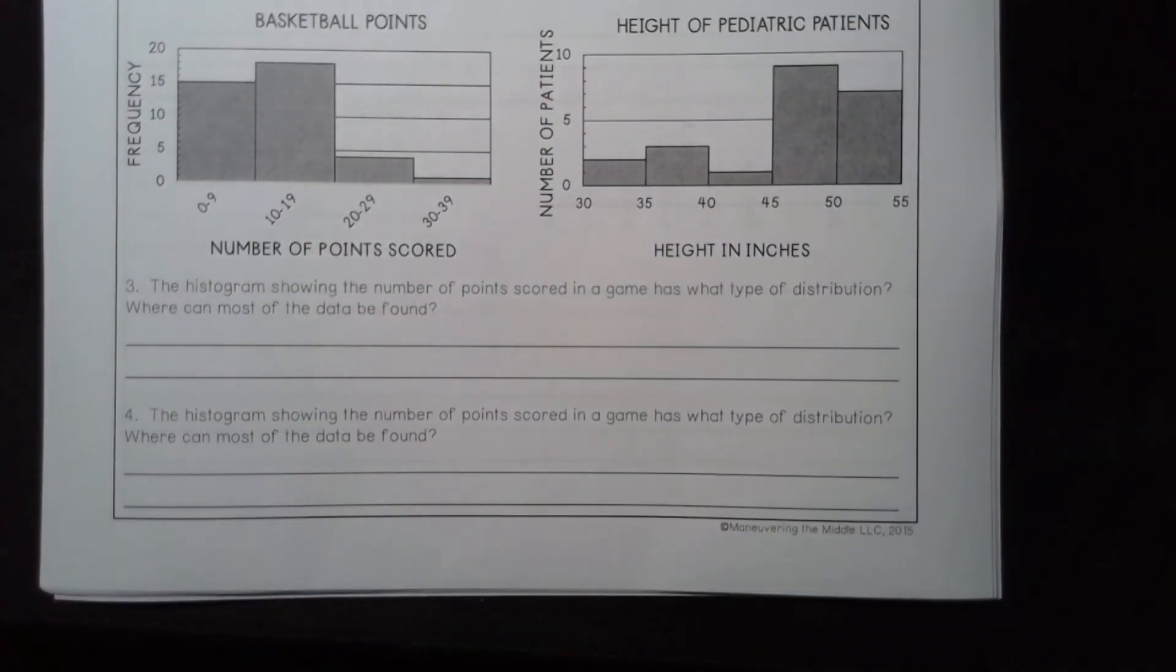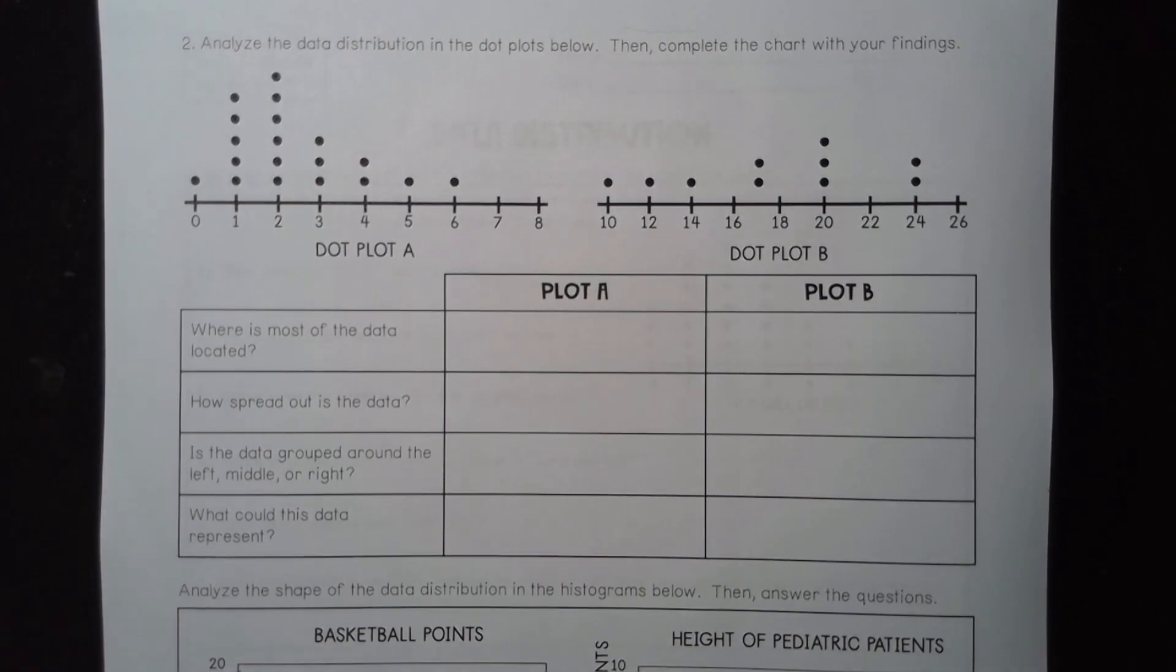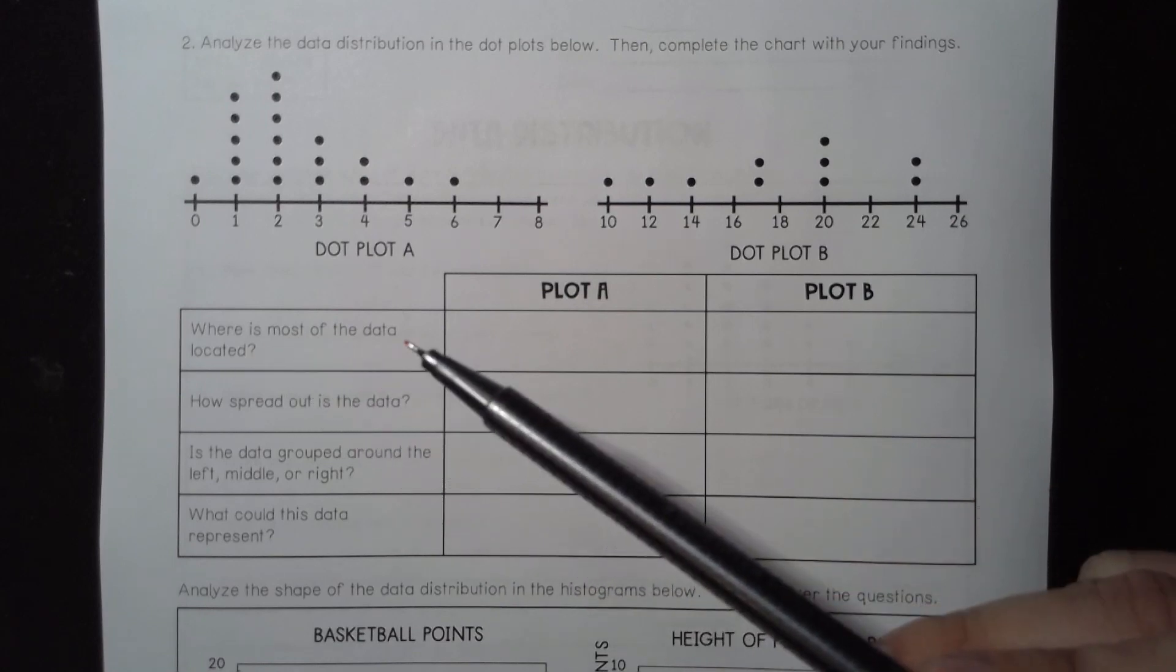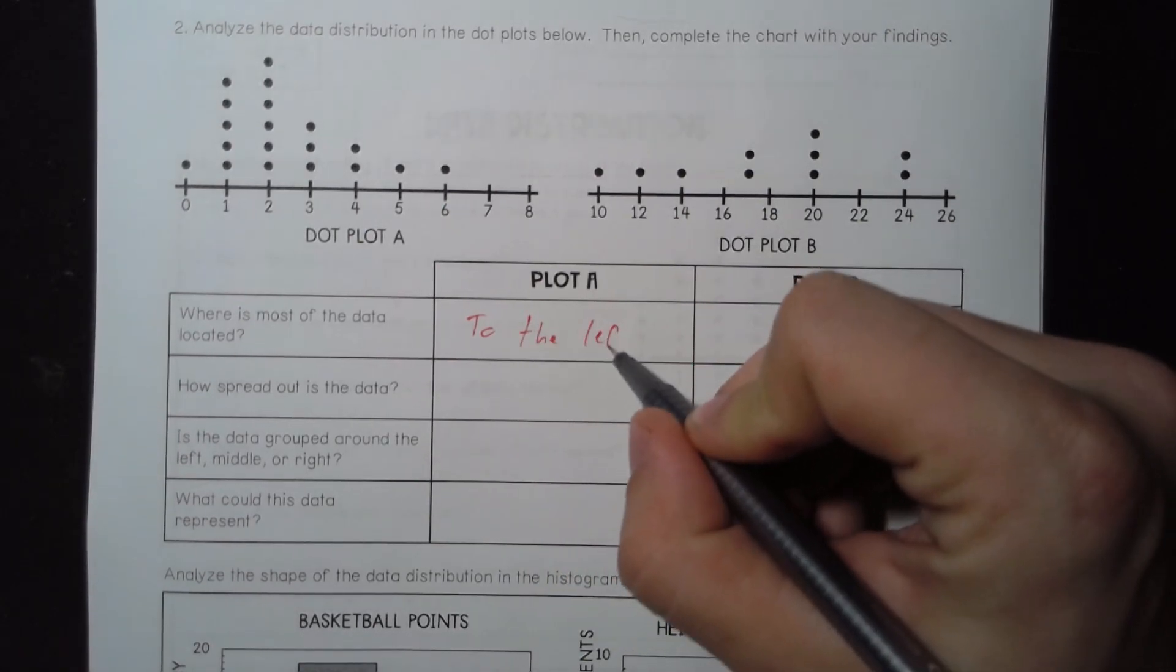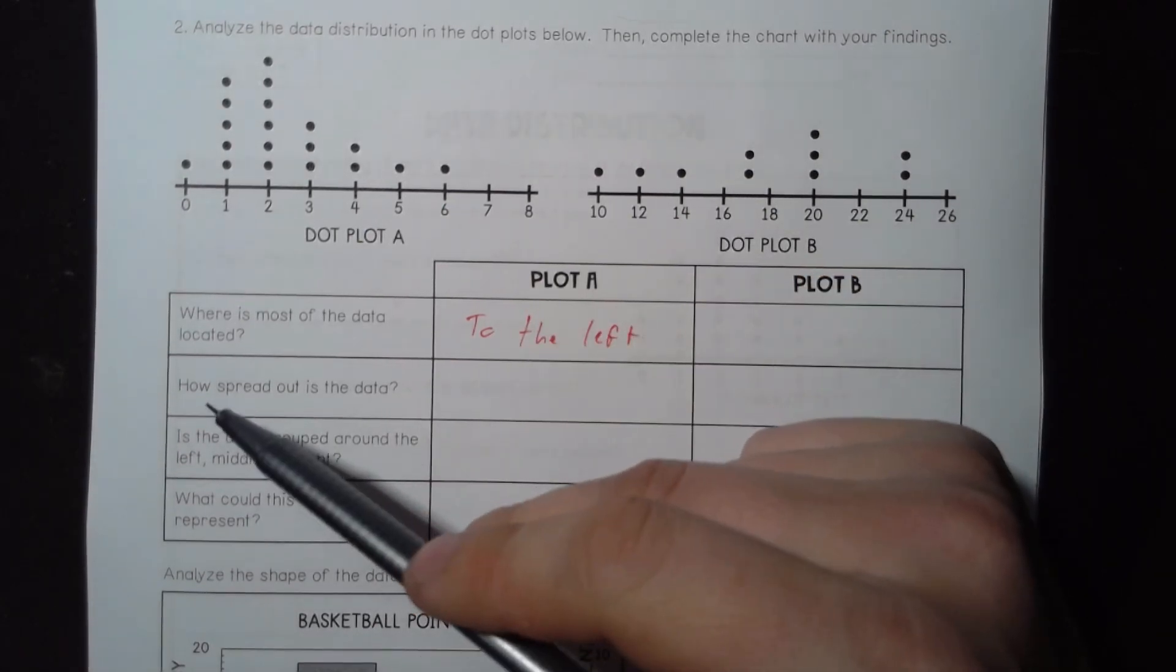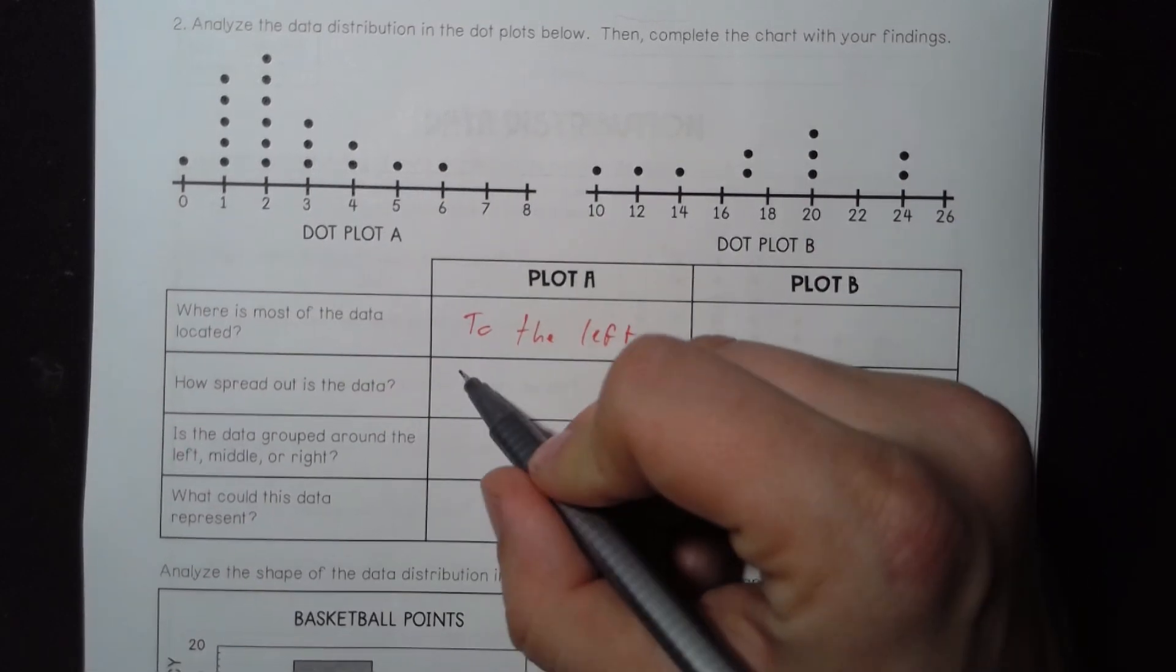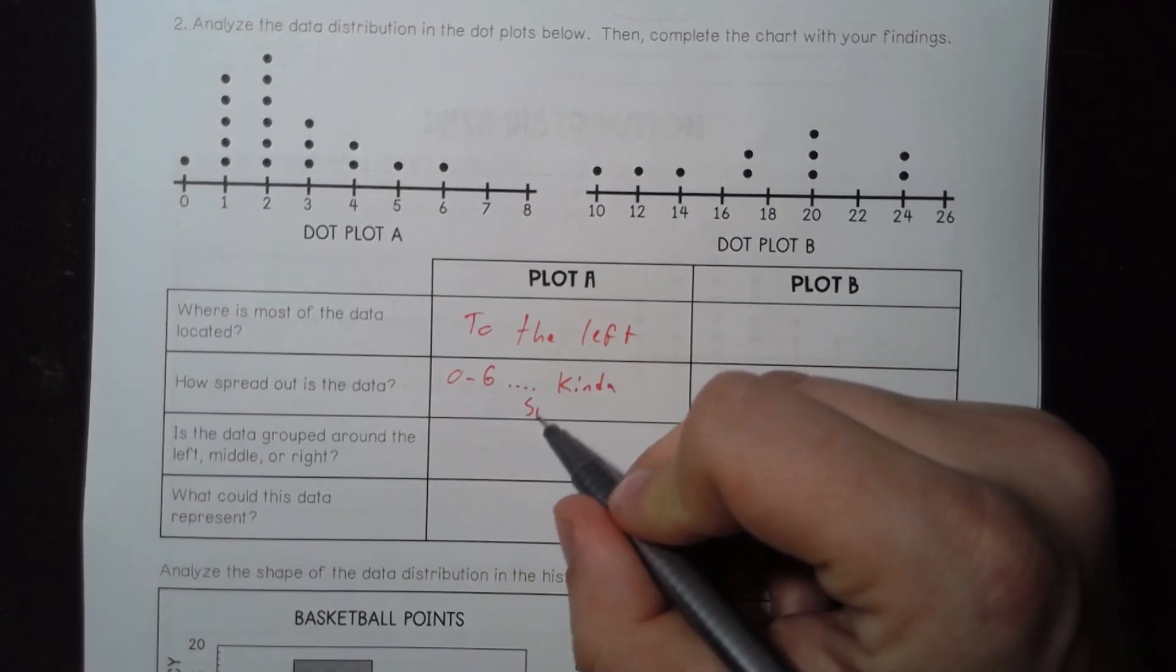Moving on. This would be the second page, or the second part of the file. It says, scrolling up, analyze the data distribution of the dot plots below. Then, complete the chart with your findings. All right. So, we've got plot A. Where is most of the data located? That's to the left. To the left. How spread out is the data? I mean, it goes from like, zero to six. Kind of spread. Kind of spread out.